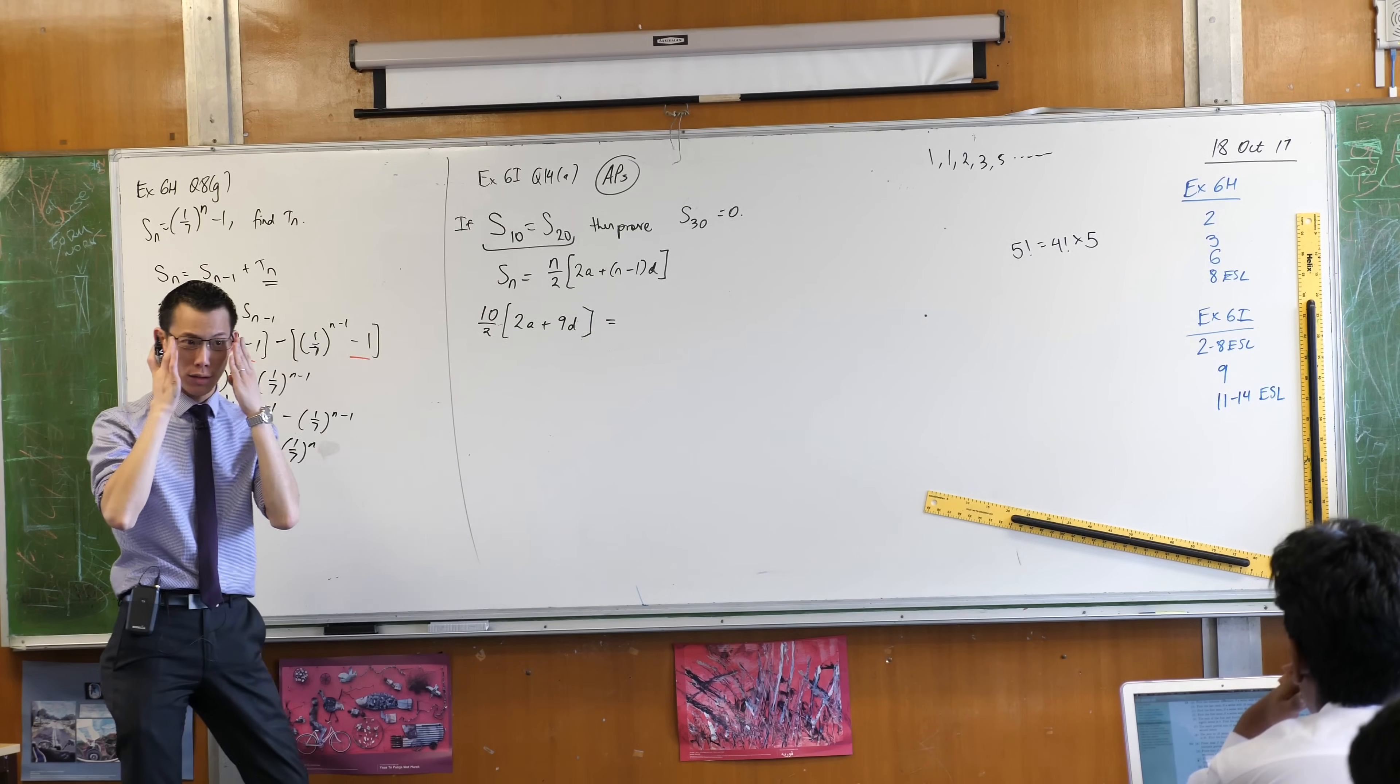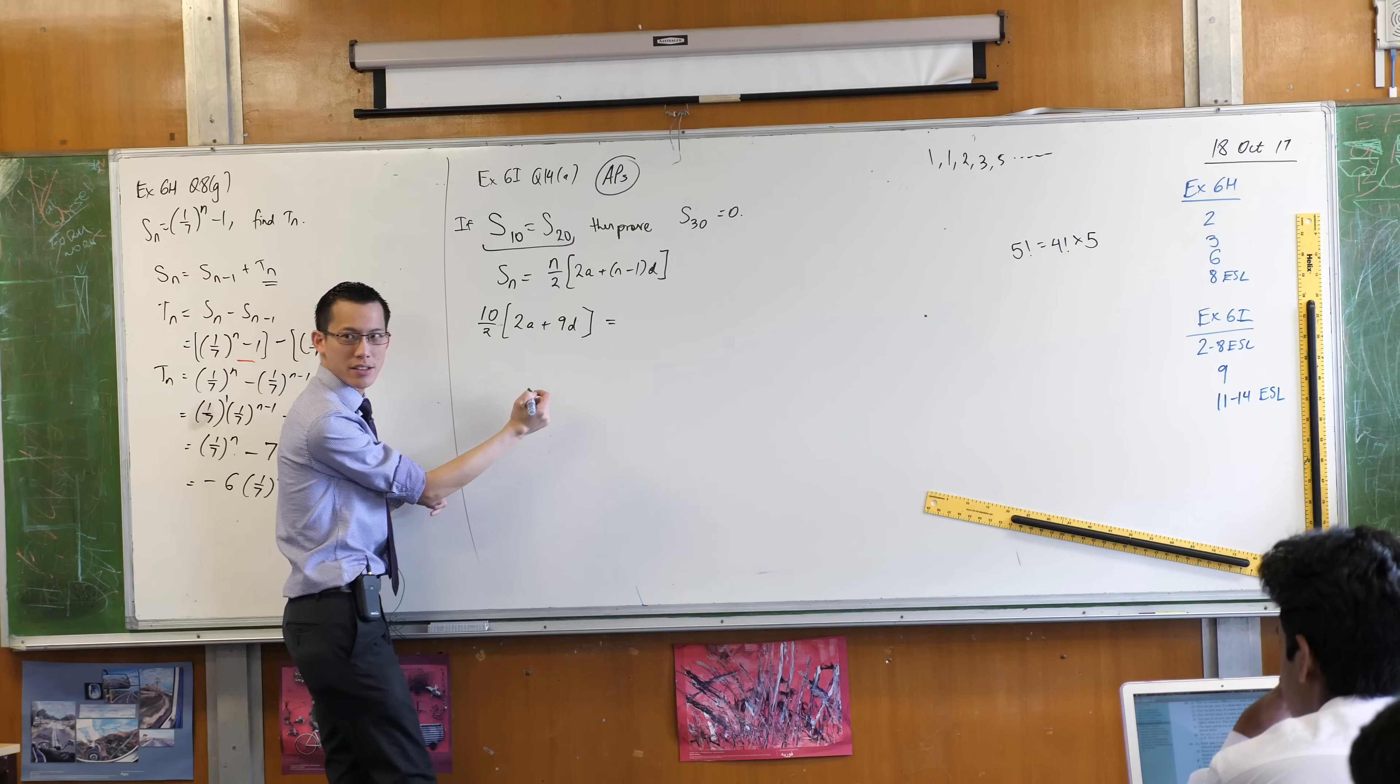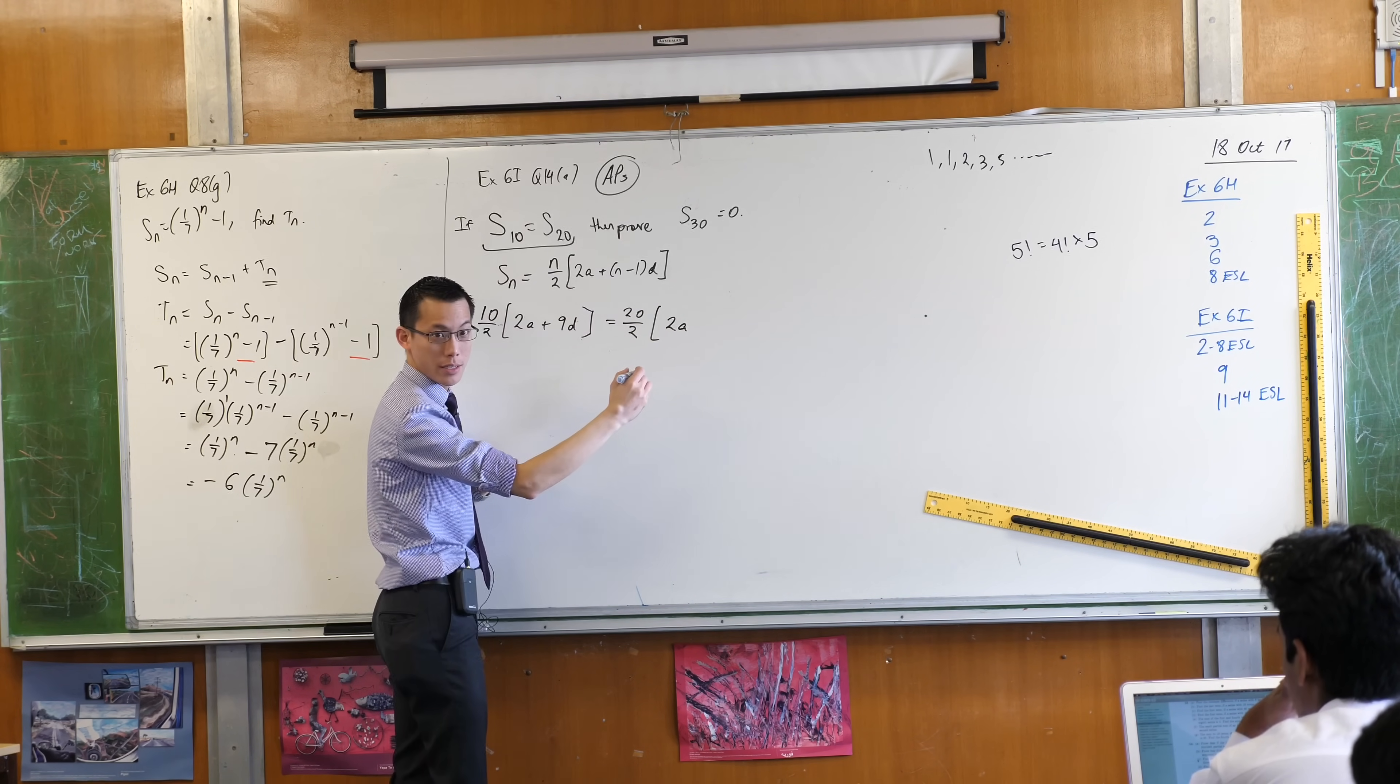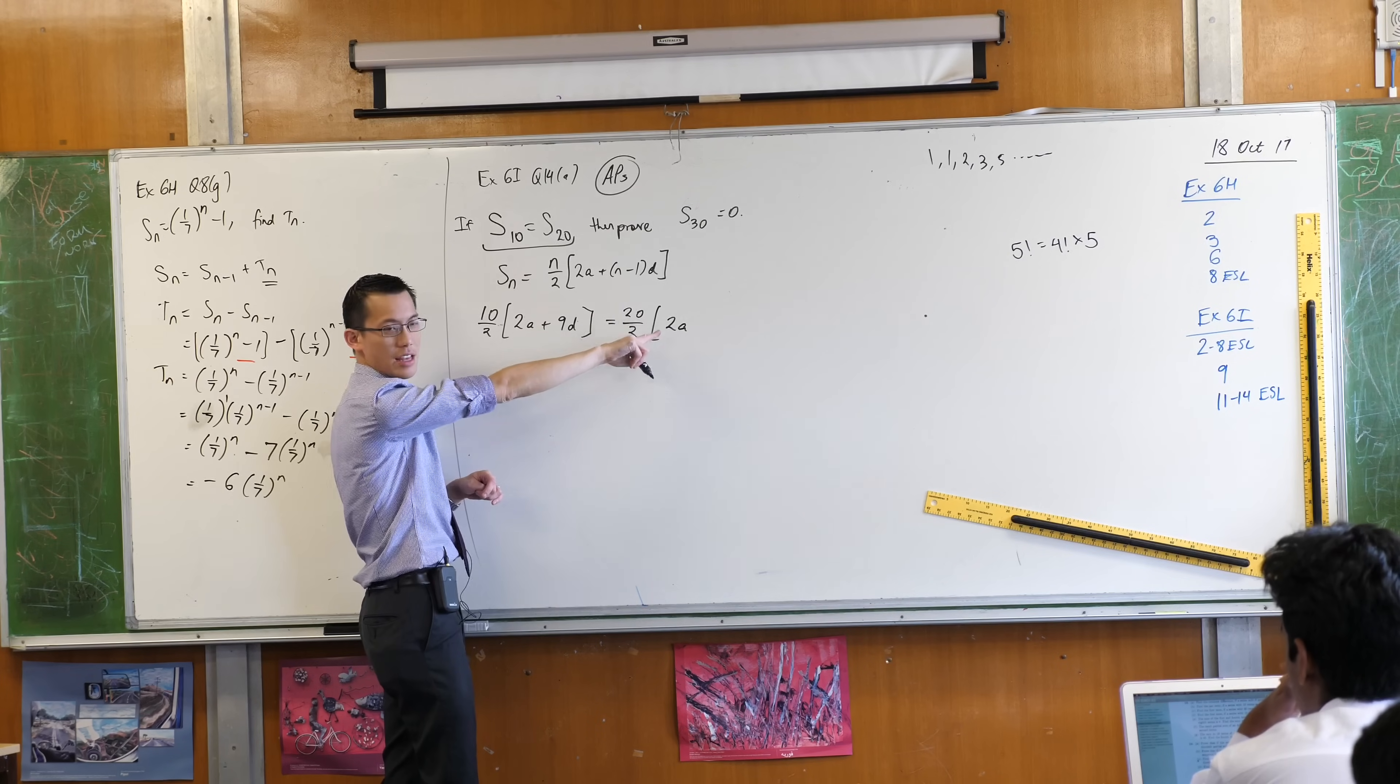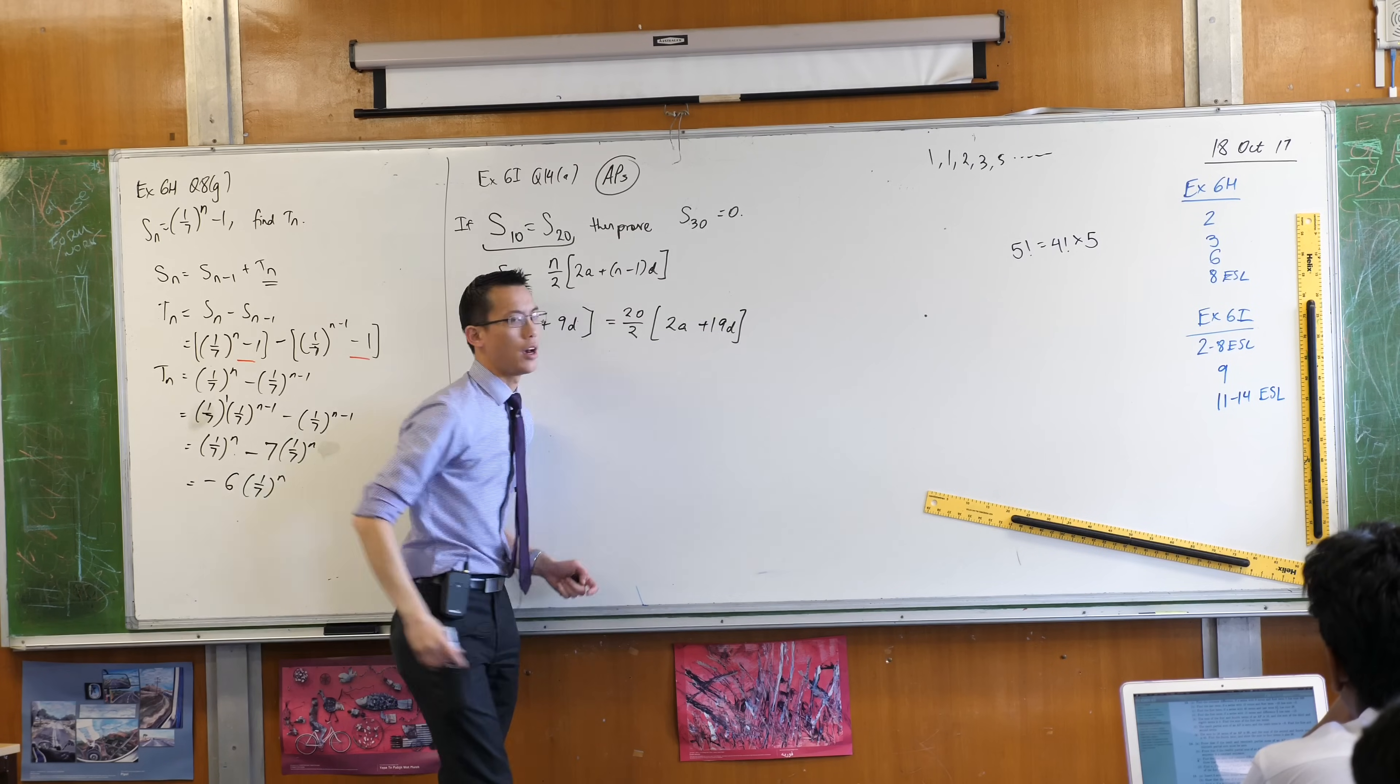Apparently, the question says that's equal to the 20th partial sum. So what's that going to have on the right-hand side? There's the n on 2. I still don't know what the first term is, but now I know how many common differences there will be. There will be 19 of them.